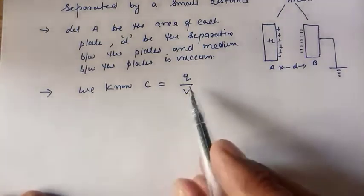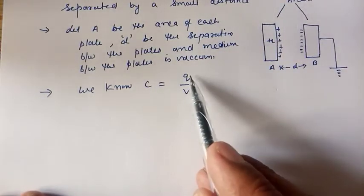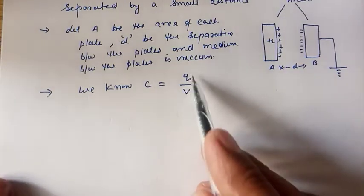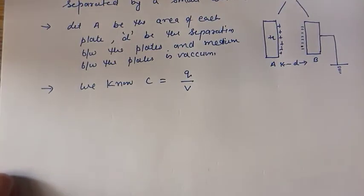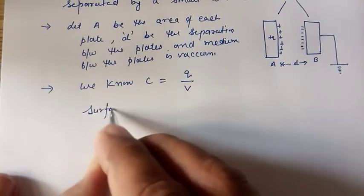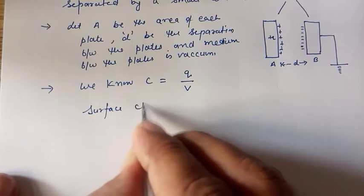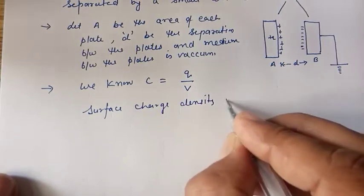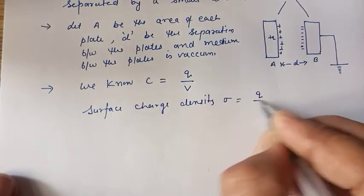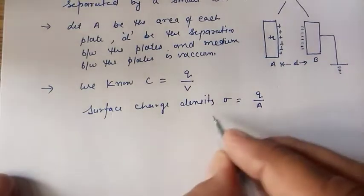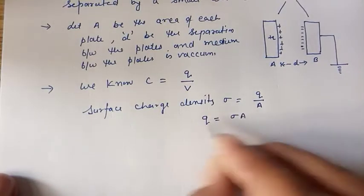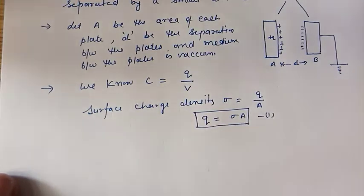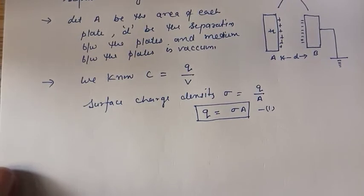To find the capacitance we need charge Q and potential V. For charge, we use surface charge density. Surface charge density sigma is charge upon area, so from here Q equals sigma times A. Let this be equation number 1. Now we have to find the potential.